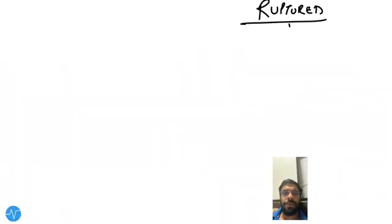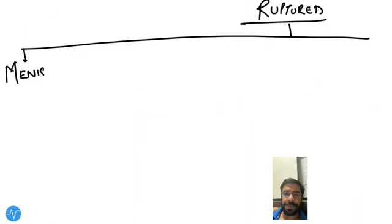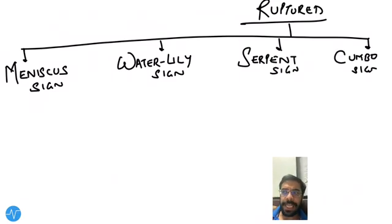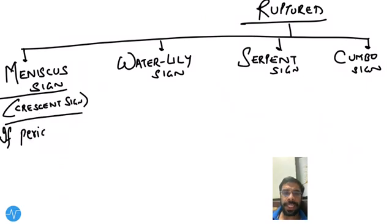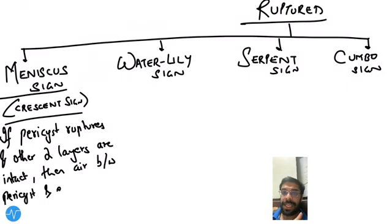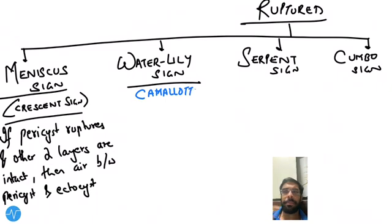Features of a ruptured hydatid cyst include four signs: first, the Minister sign (also known as the Crescent sign); second, the Water Lily sign; third, the Serpent sign; and fourth, the Cumbo sign. In the Minister sign, the pericyst ruptures but the ectocyst and endocyst remain intact, so air enters between the pericyst and ectocyst, forming a crescent of air.